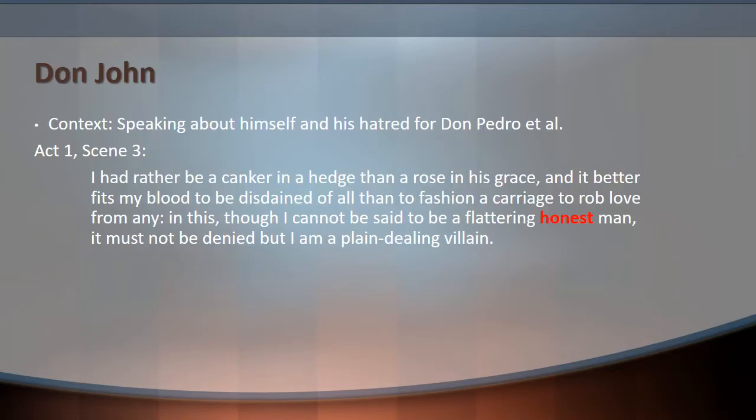Let's move on to a different use of 'honest,' this one by Don John. This comes in Act 1, Scene 3. The context is he's talking to Conrad and Borachio about himself and his hatred for his brother Don Pedro, for Benedict, and for Claudio. He says: 'I had rather be a canker in a hedge than a rose in his grace, and it better fits my blood to be disdained of all than to fashion a carriage to rob love from any. In this, though I cannot be said to be a flattering, honest man, it must not be denied but I am a plain-dealing villain.'